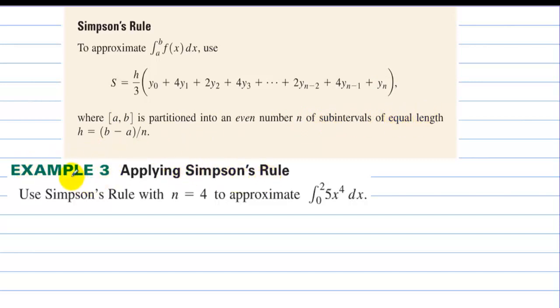Applying Simpson's rule. Use Simpson's rule with n equals 4 to approximate the area under the curve from 0 to 2. So if we're going to go from 0 to 2 with 4 subintervals, we have 0 to 0.5 to 1 to 1.5 to 2. We'd have 1, 2, 3, 4 subintervals.